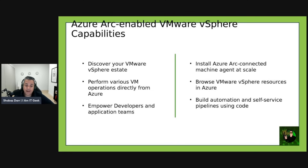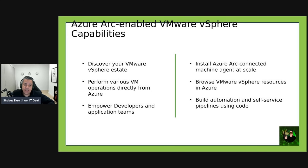This empowers your developers and application teams to self-serve when it comes to VM operations on demand using Azure RBAC controls. You can install the Azure Arc connected virtual machine agent at scale and leverage all the capabilities offered by Azure Arc. You can browse your vSphere resources — VMs, templates, etc. — in that single pane of glass. You can also build automation using Python, Java, JavaScript, ARM, Bicep, REST APIs, and similar tools.